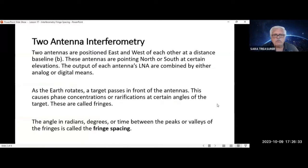For amateurs, we use two-antenna interferometry. These are positioned east and west of each other at a distant baseline of B. These antennas are pointed north or south at certain elevations along the meridian. The output of each antenna's LNAs are combined by either analog or digital means.